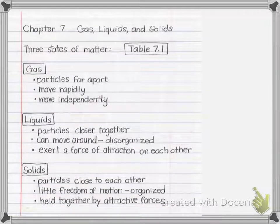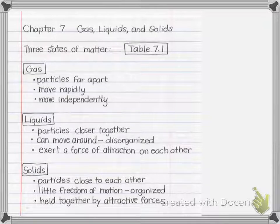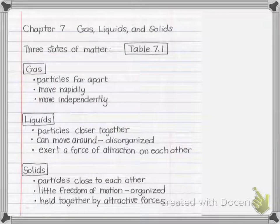Matter exists in three common states: gas, liquid, and solid. In this chapter we will look at some of the properties of these three states. It helps us to understand matter in terms of its properties when we look at it at the molecular level.